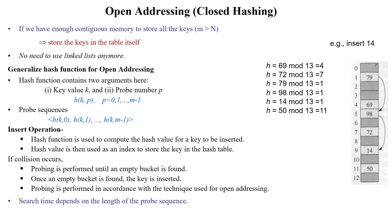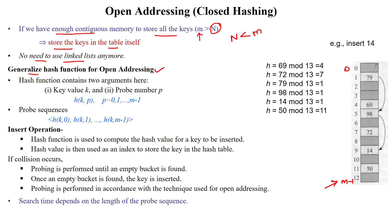Welcome to open addressing, also known as closed hashing. This can be used when we have enough contiguous memory locations in the given hash table to store all the keys. That is, we have more number of memory locations — from 0 to m minus 1 — than the number of inputs. So if the input is less than the number of buckets available in the hash table, we can store all the keys in the table itself. We don't need any linked list like in separate chaining. Here we can generalize the hash function for open addressing in the form of a key-value pair and also a probe number.